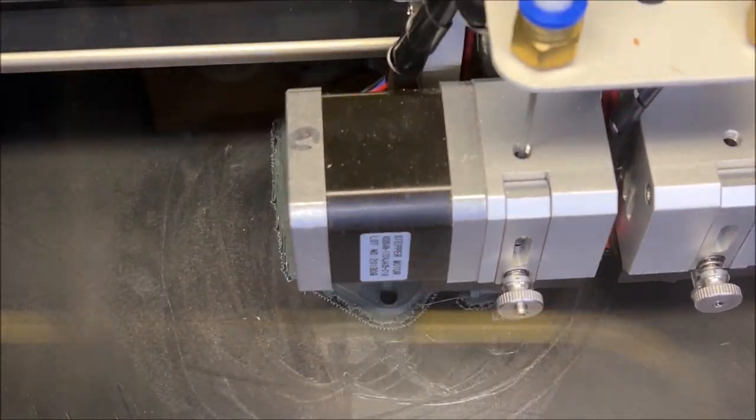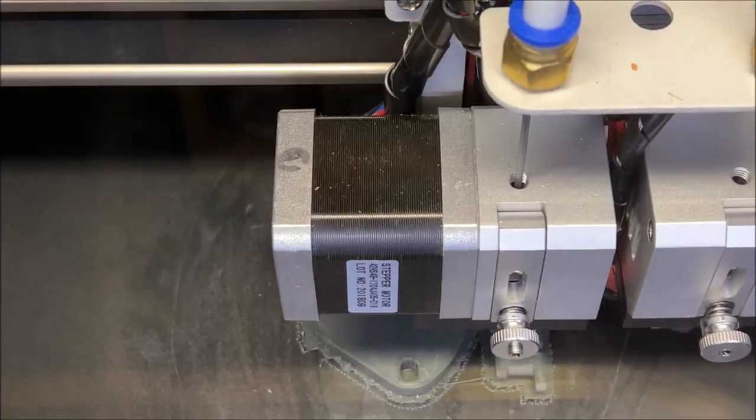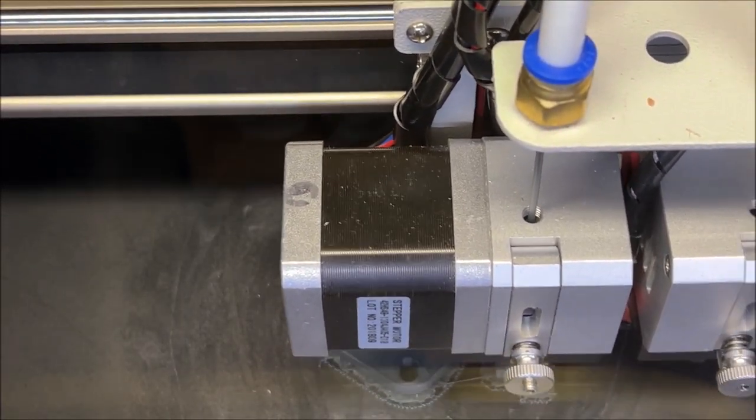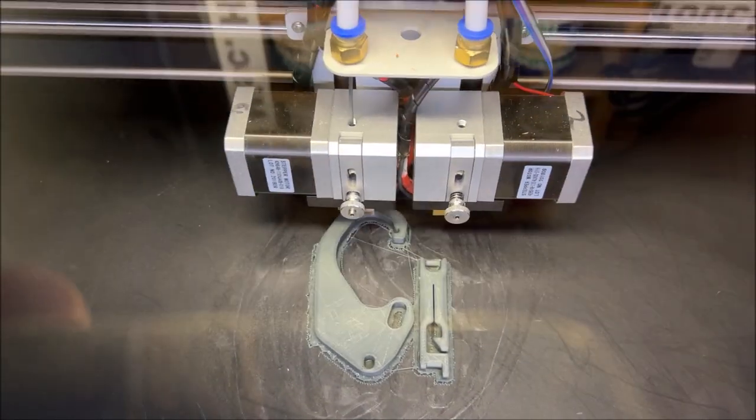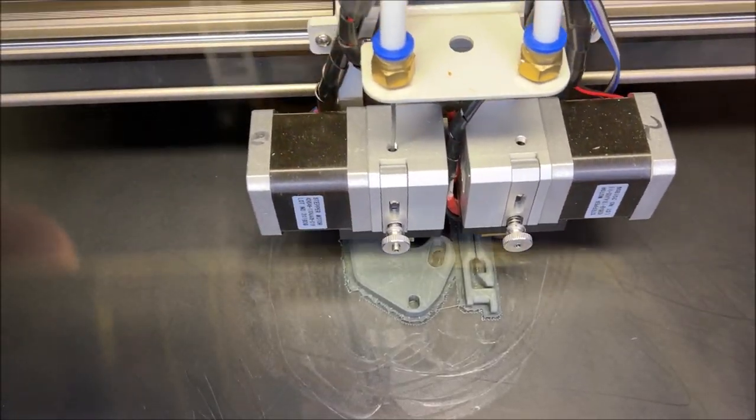3D printing is all about temperature. The extruders where the plastic goes into the head there, they run at 210 degrees C. The bed which you see the print fastened to, that bed runs at 52 degrees C.